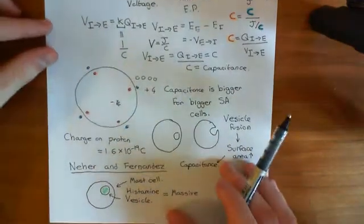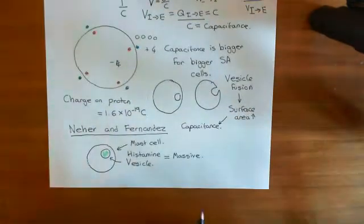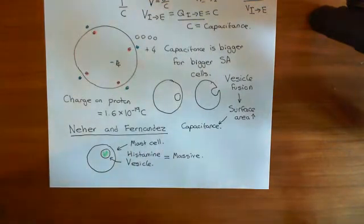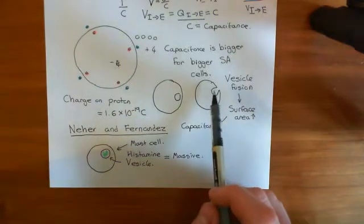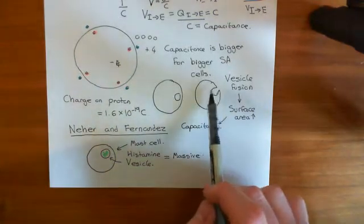So we've talked about how this change in capacitance can be used to measure vesicle fusion, because if a vesicle is going to fuse with the cell membrane, then that's going to increase the surface area of the cell membrane.